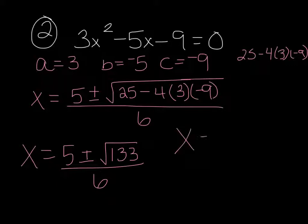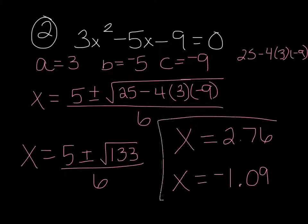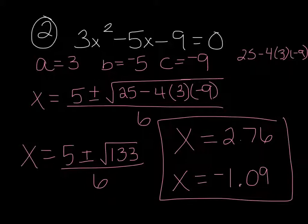Let's finish this problem. Type it in your calculator: 5 plus second key, square root key, 133, enter, then divided by 6, and you're going to end up with 2.76 as one answer. Do the same thing with minus and you're going to get negative 1.09. I will show you how to type it in your calculator more in class — worry about setting it up right now and being able to figure out what this discriminant number is.